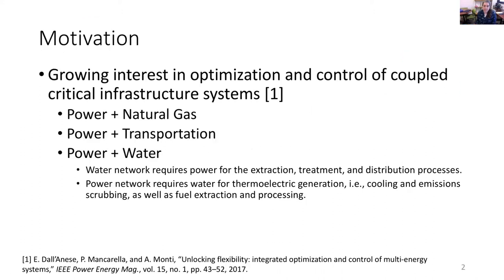The motivation of our work is optimization and control of coupled infrastructure networks to improve reliability and resilience. There has been significant work on modeling and optimizing power and natural gas networks, and power and transportation networks — especially with electric vehicles. What I'll talk about here is power and water networks. The water network requires a lot of energy for extraction, treatment, and distribution, and the power network requires water for cooling, emission scrubbing, fuel extraction, and processing. These networks are highly interdependent.